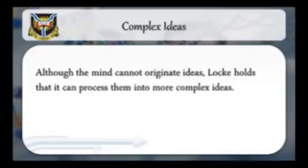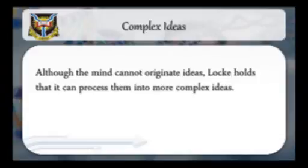Complex Ideas: Like the camera film that receives and recalls the light that enters through its lens, so the human mind can receive ideas through experience. However, these ideas are sounds, colors, and other things of sensation. Although the mind cannot originate ideas, Locke holds that it can process them into more complex ideas. For instance, the idea of space can be combined with other perceptions of space to produce an immense space. In the same vein, the idea of sweetness, that of roundness, that of yellow, and so on, can be combined to produce the idea of apple.